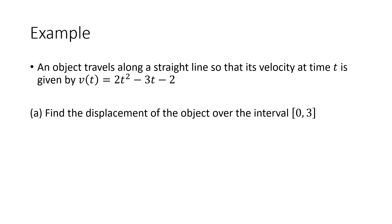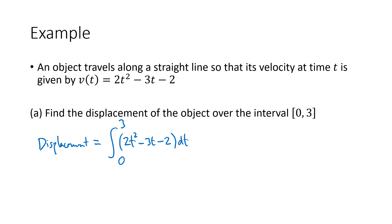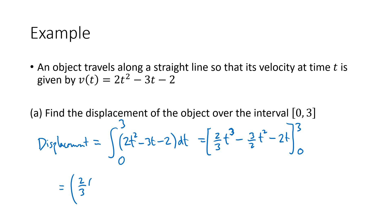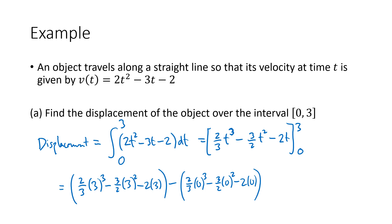Let's look at an example of displacement. We have velocity function v(t) = 2t² − 3t − 2, and we want to find the displacement over the interval from 0 to 3. Displacement is the integral of the velocity function from 0 to 3. Finding the antiderivative: the antiderivative of 2t² is (2/3)t³, the antiderivative of 3t is (3/2)t², and the antiderivative of 2 is 2t. We plug in 3 and 0 and subtract. When we plug in 0, we get zero.